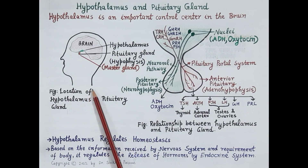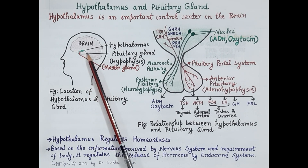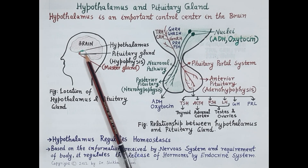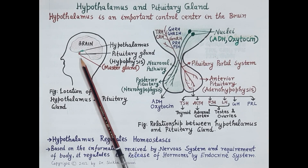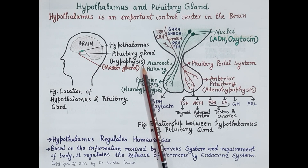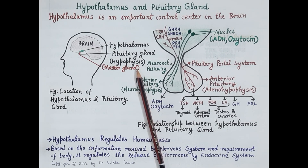Now look at this figure. Hypothalamus, shown here in green, is a small area of the brain. It is termed as hypothalamus as it is located under the thalamus. Pituitary gland, shown in red, is located just below the hypothalamus. The size of pituitary gland is that of a pea. Its weight is around 500 milligrams and it is also called as hypophysis or the master endocrine gland.